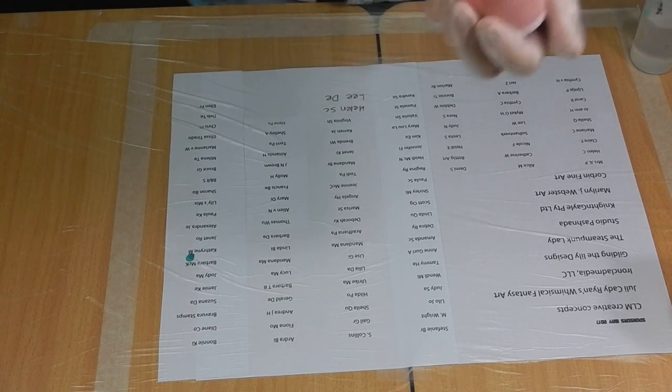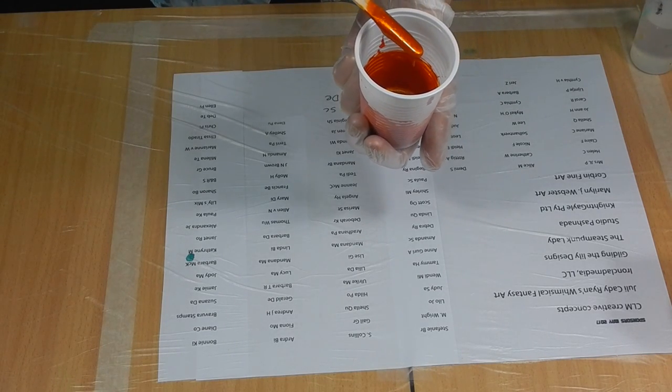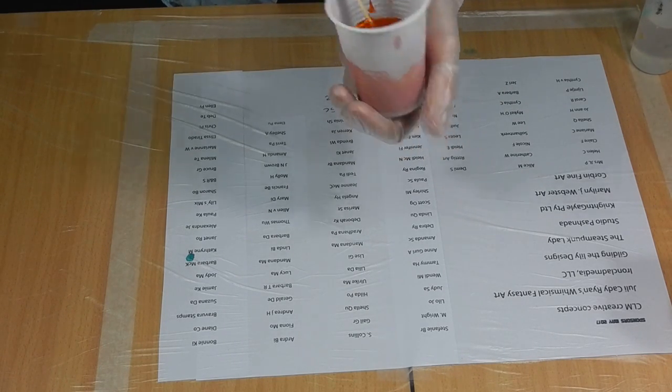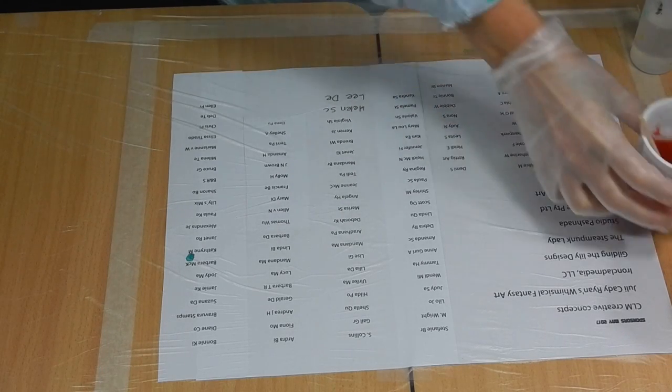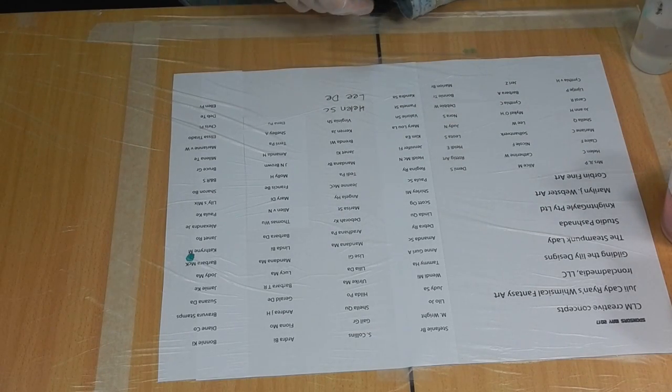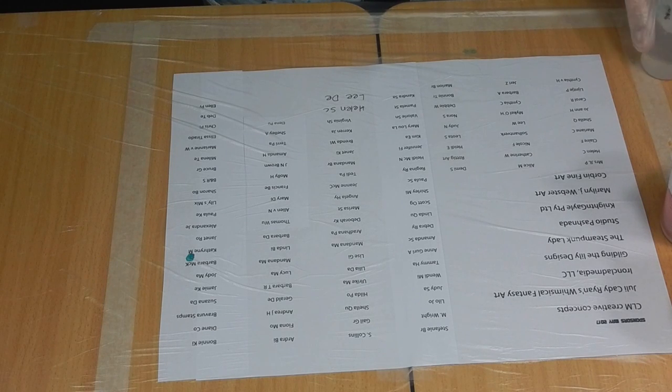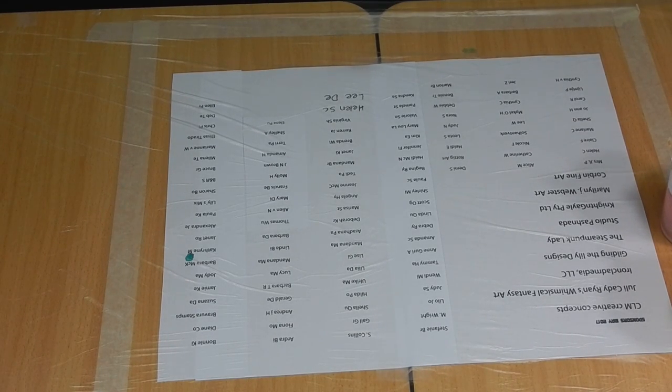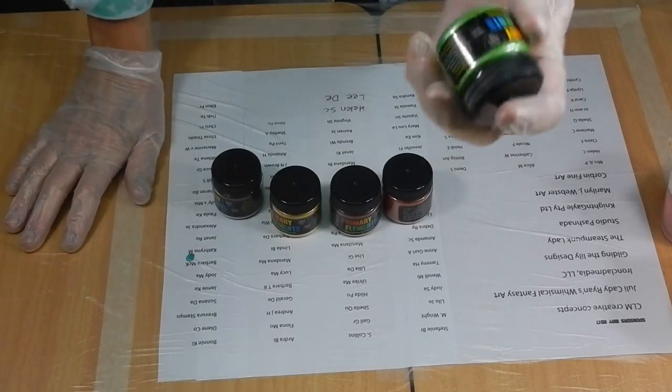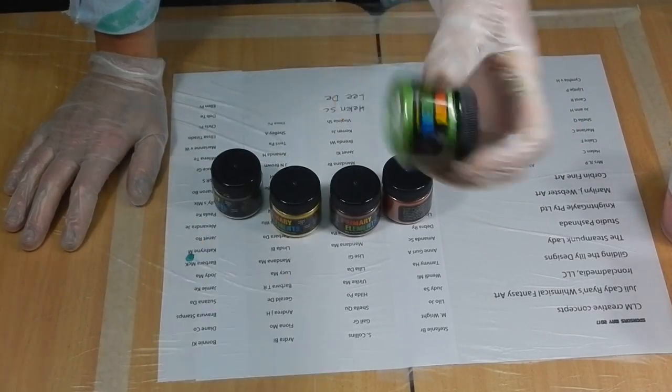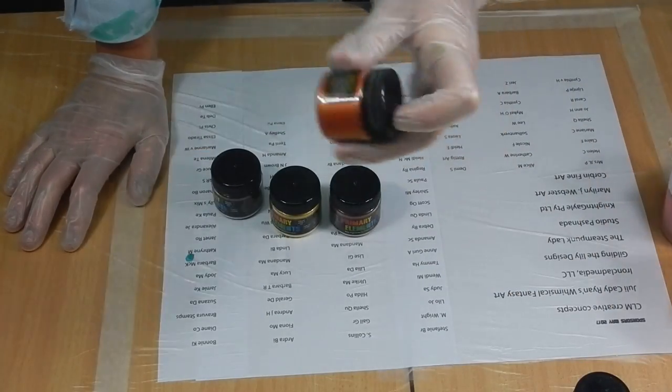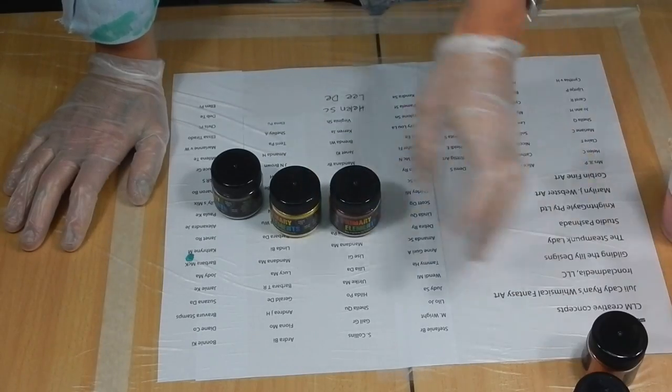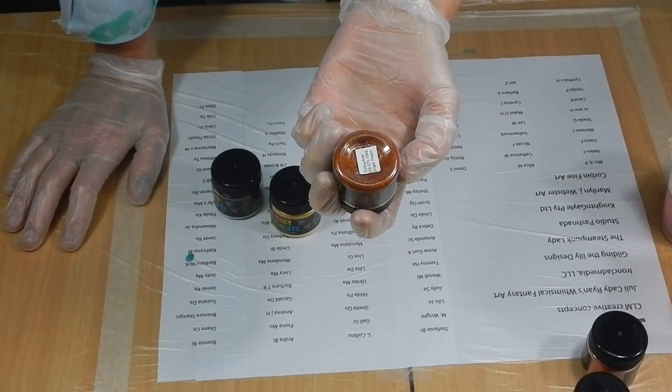And right now, we're going to be playing with the pigments again. So I showed you in the last video the colors that I went for. I left some out, I will go get them. The ones I use in this one is again the kiwi because I really love that. Then the orange peel and we have ginger peach.